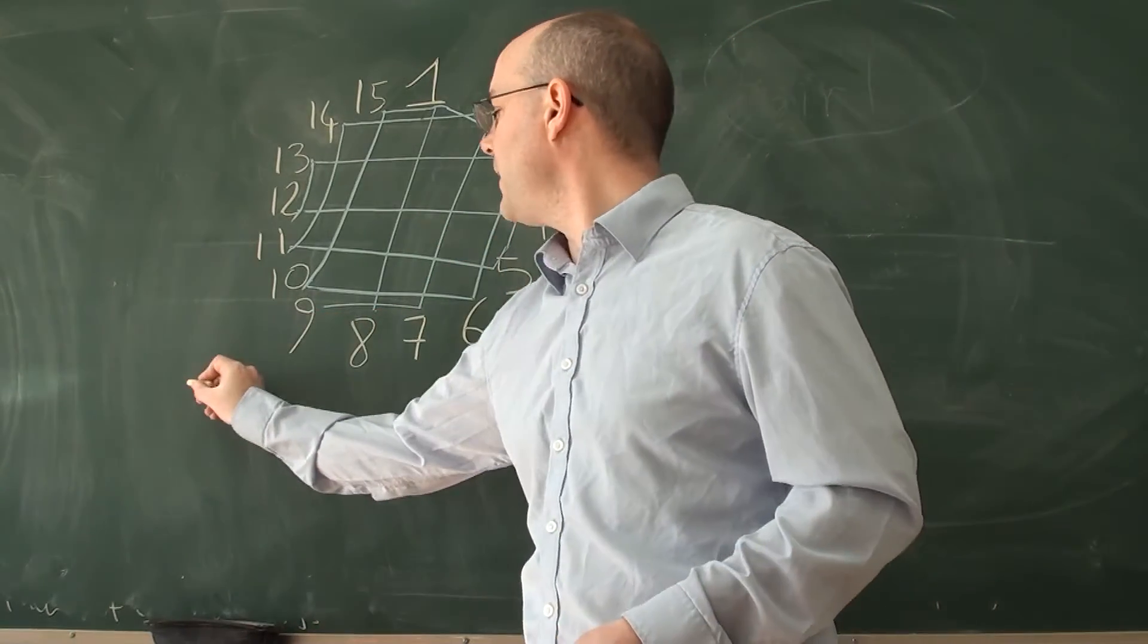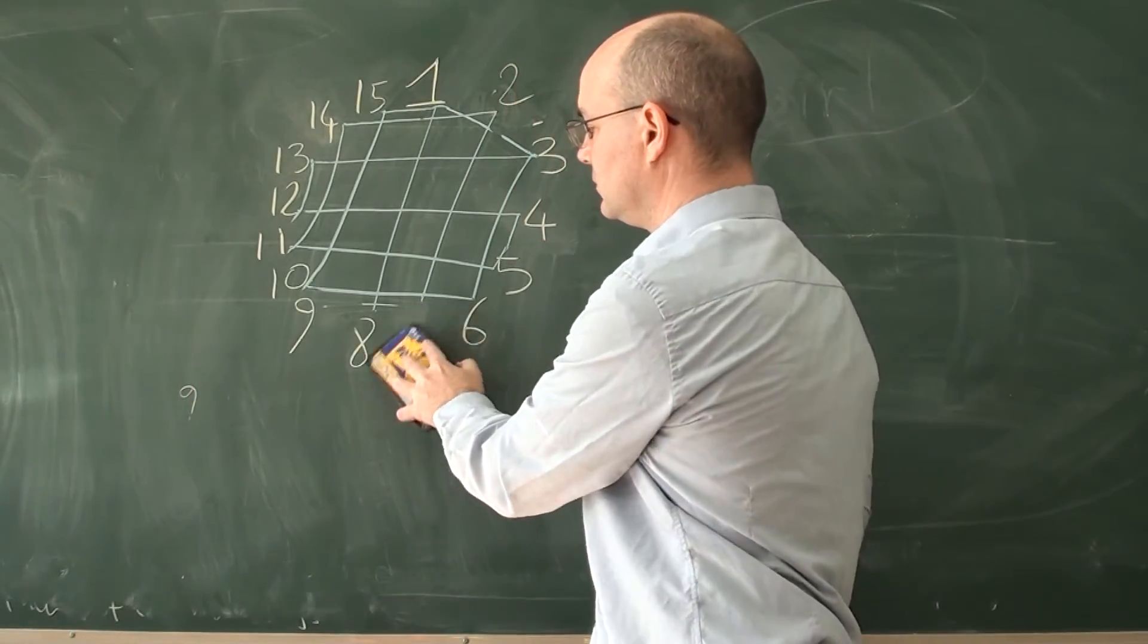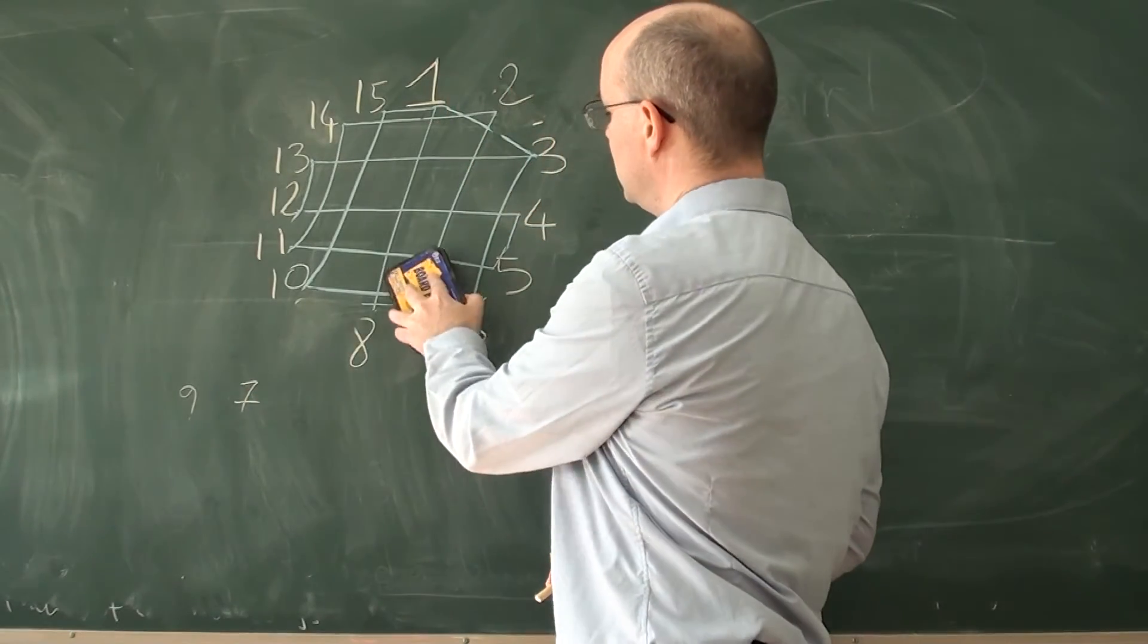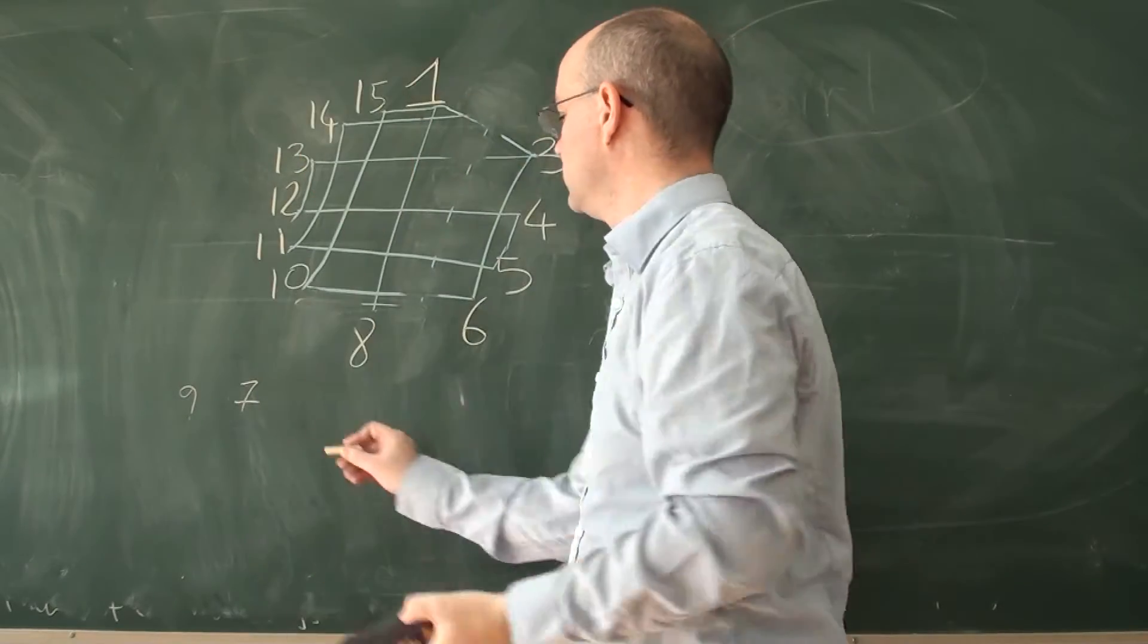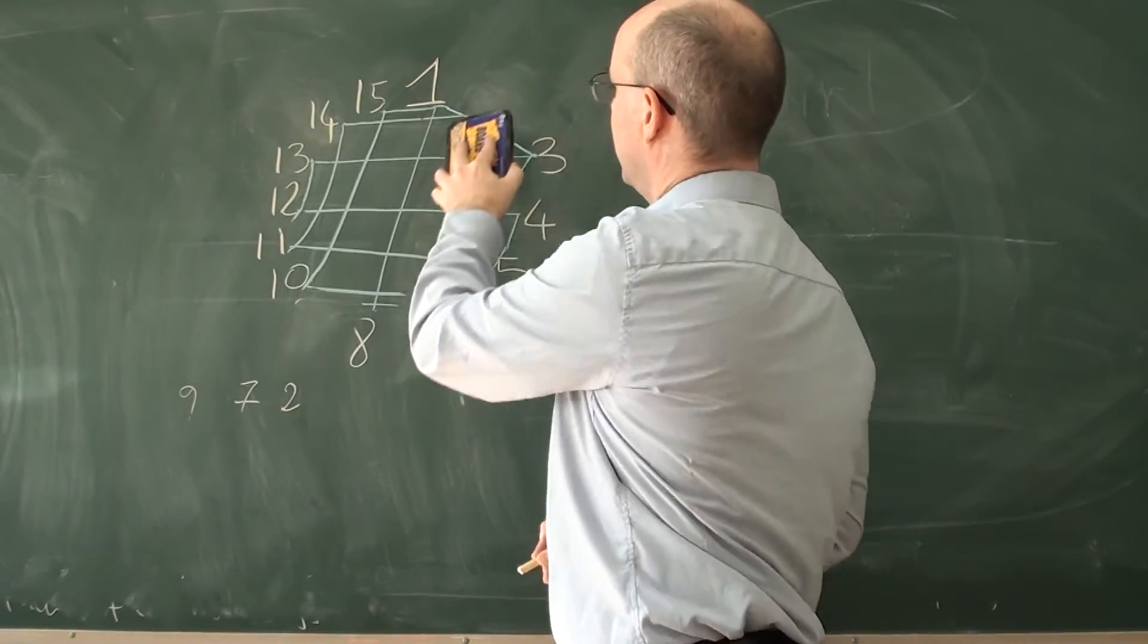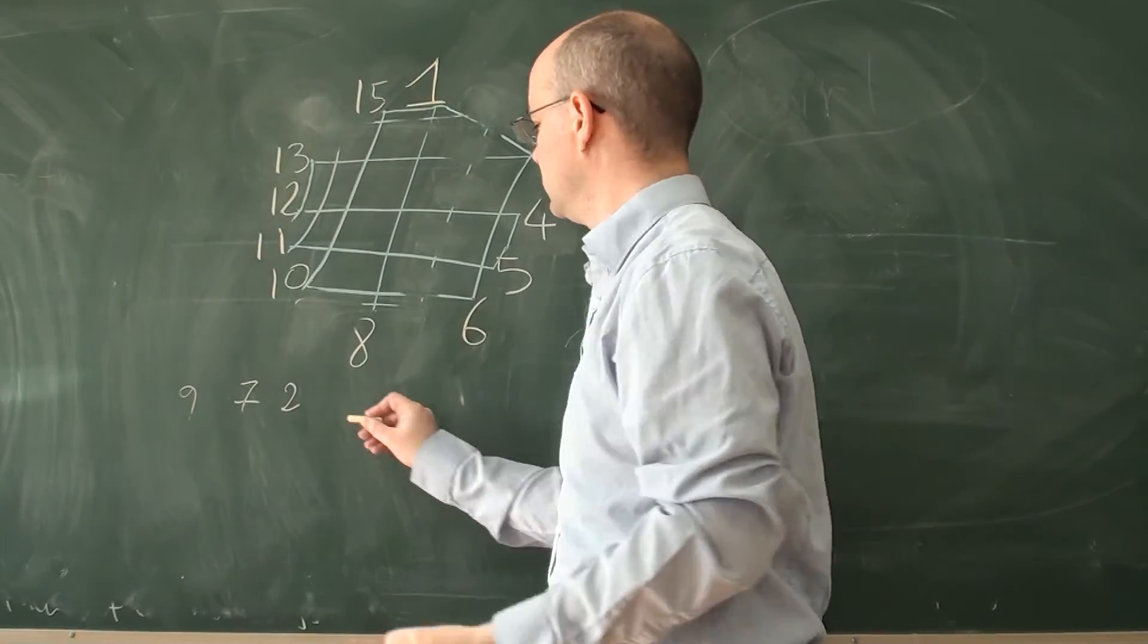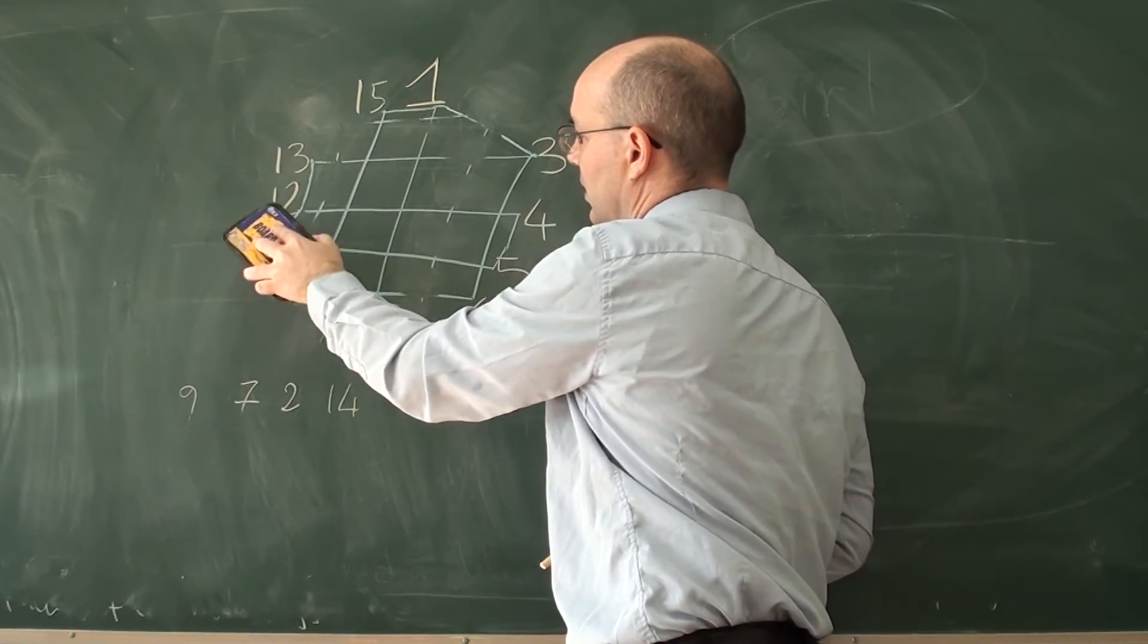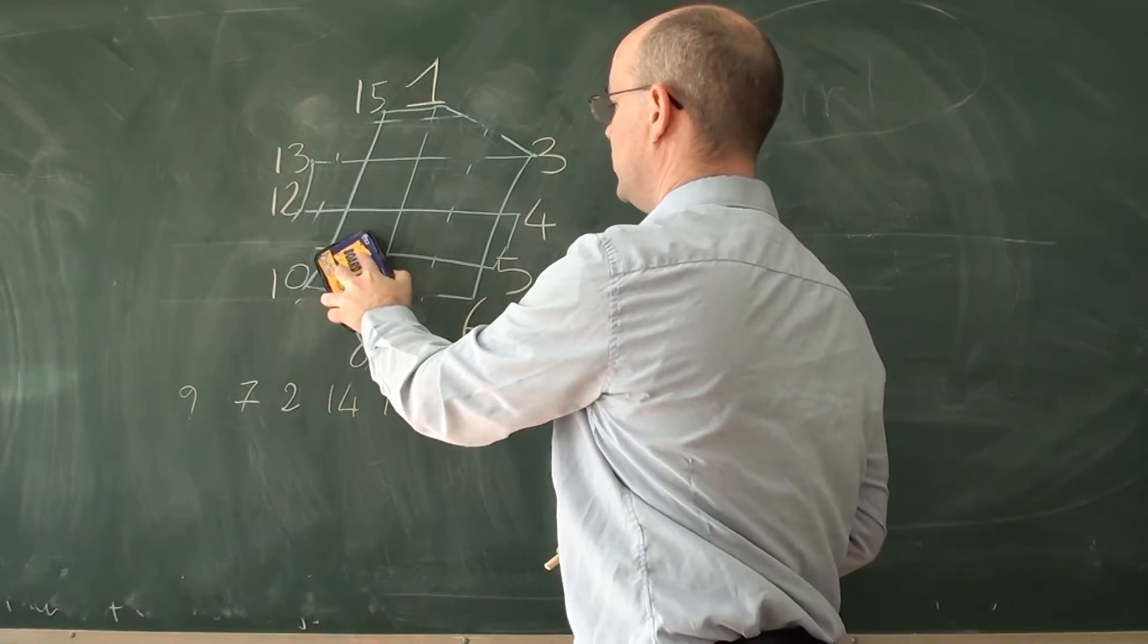So let's follow this track. We start with 9. We reach 7 that we're going to erase. Then we continue towards 2. Then we continue towards 14. 11, then 11.